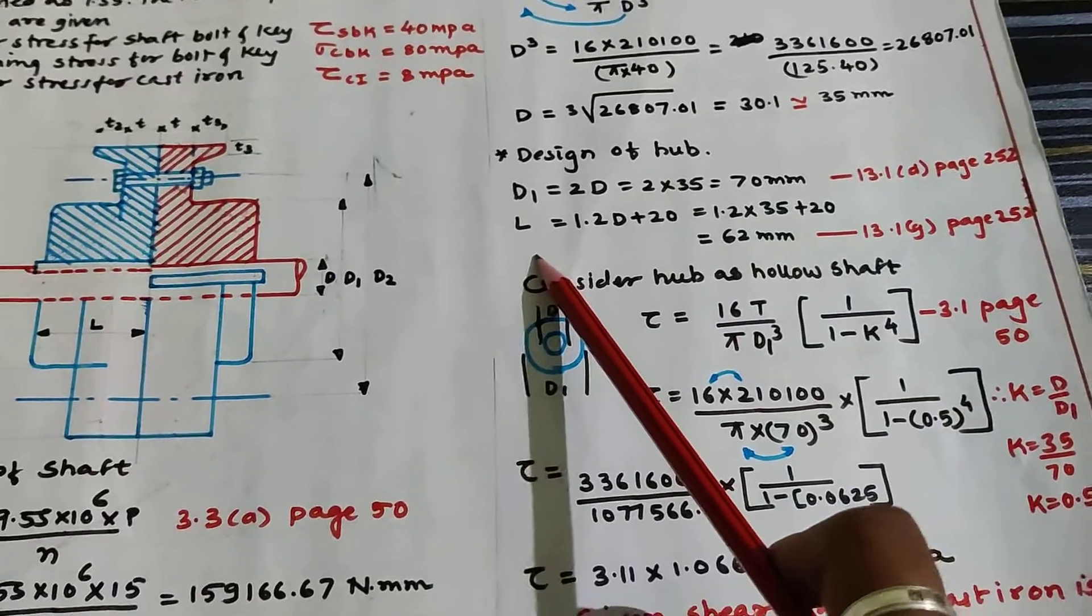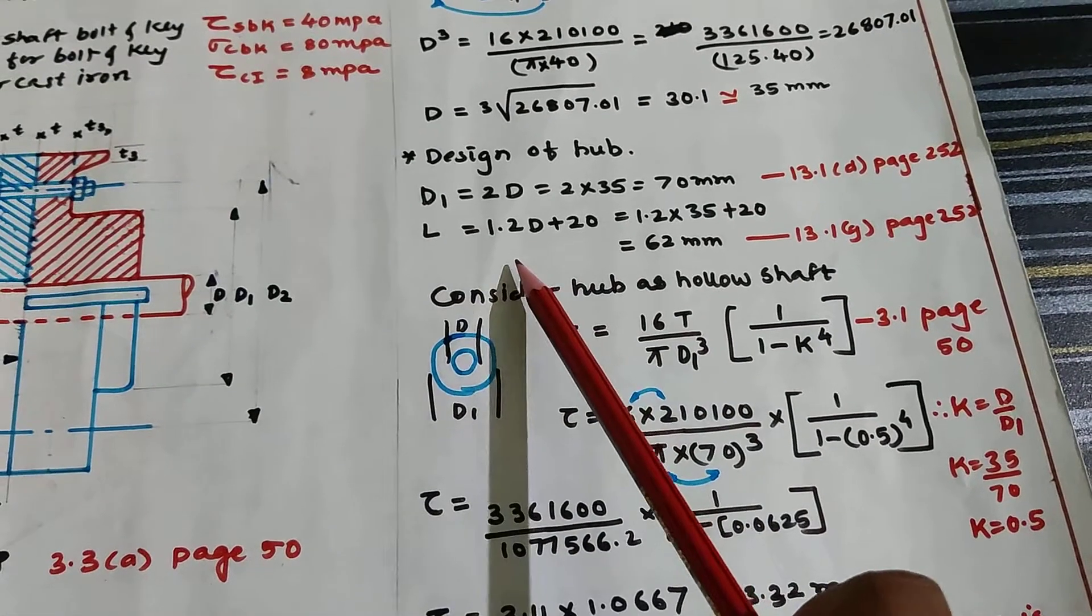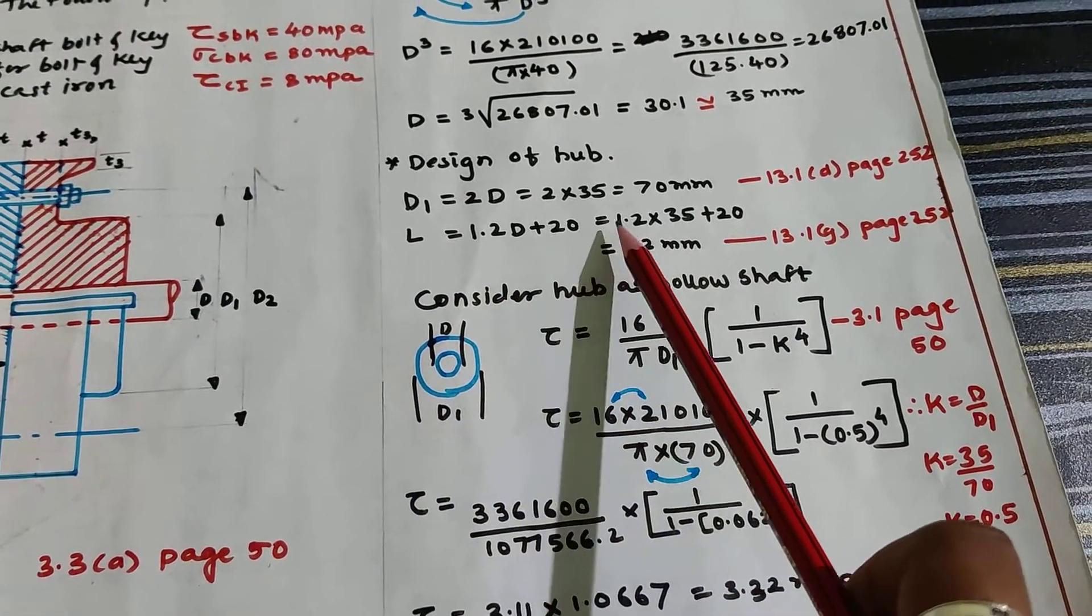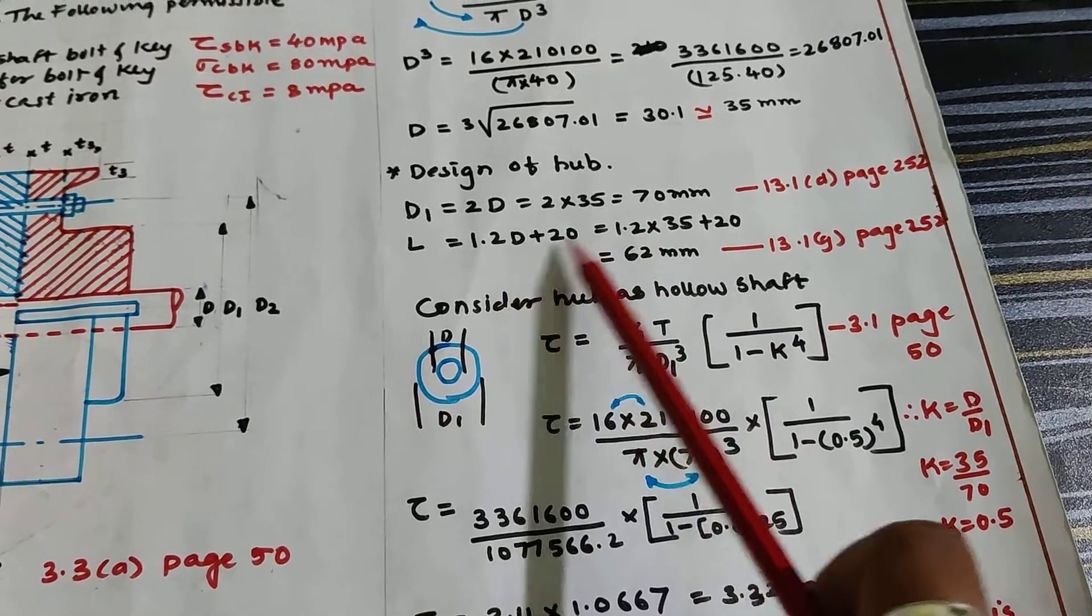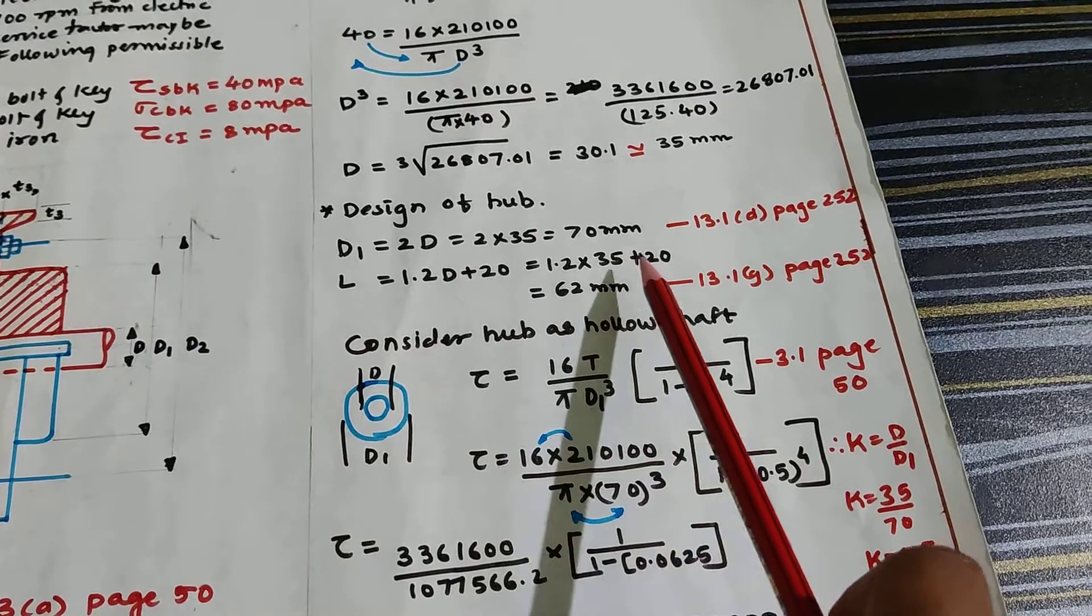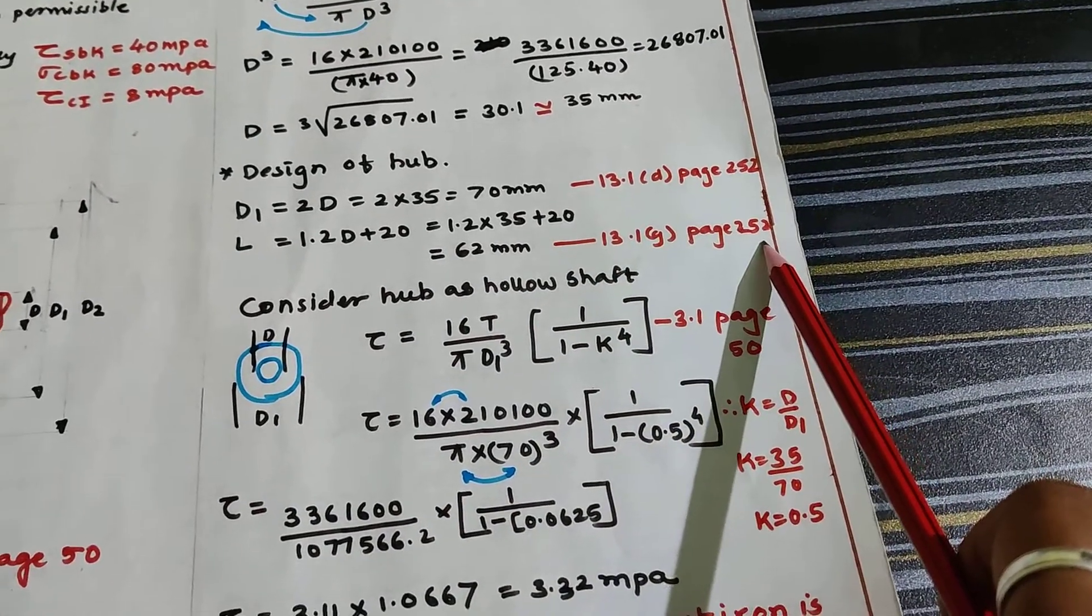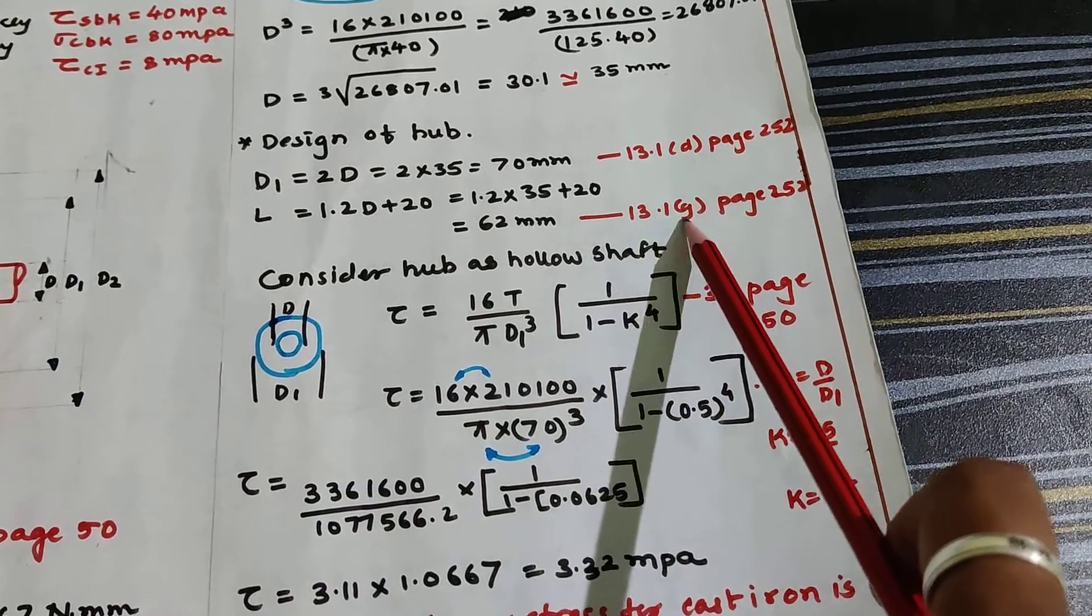Next, length of the hub from this to this. Formula: L = 1.2D + 20 mm, where D is 35. After calculation we get 62 mm. This formula is on same page number 252, equation number 13.1G.